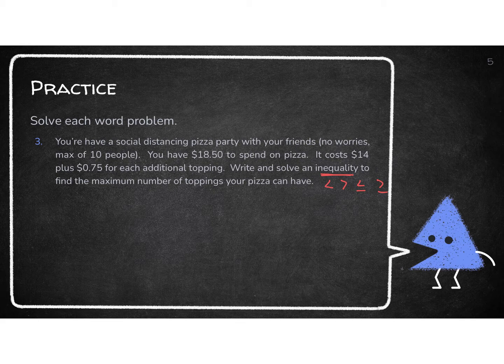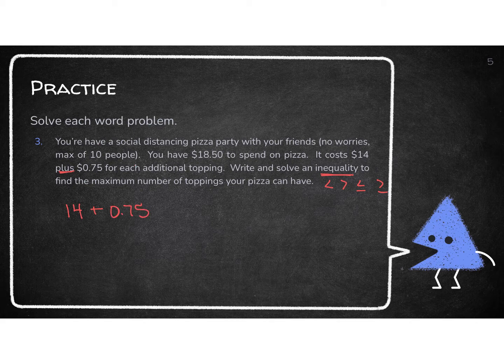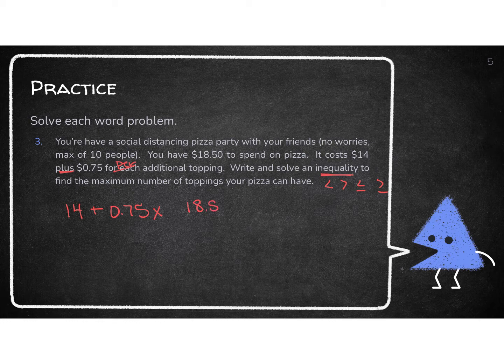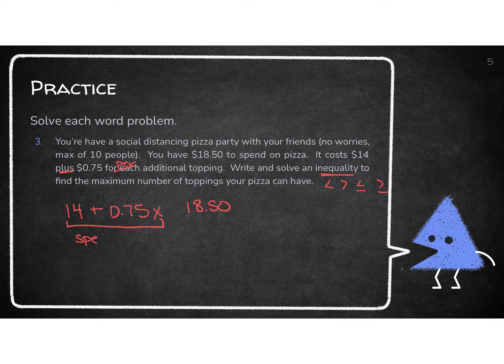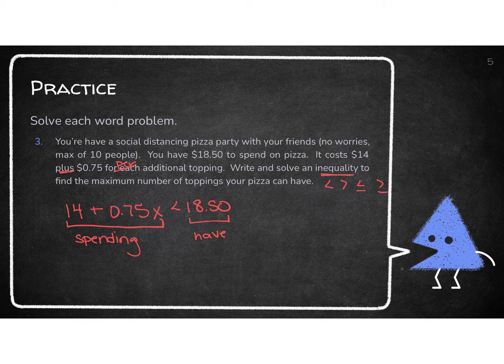Well, I am starting with the $14 that the pizza is actually going to cost me. And then I am going to plus the $0.75 for each is like saying per, right? Per. So that tells me I have the X with it. And then we know that I only have $18.50. So in this situation, this is what I'm spending. And this is what I have. So do I want to spend more than I have? No, I don't. So I need what I have to be greater than or equal to. I could spend a hundred percent of what I have.